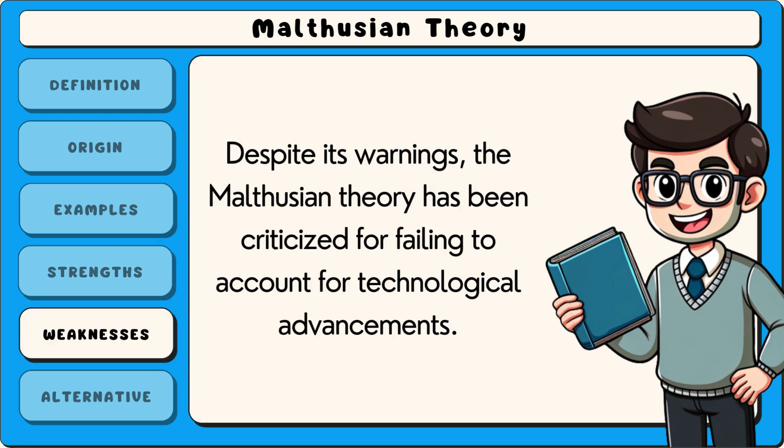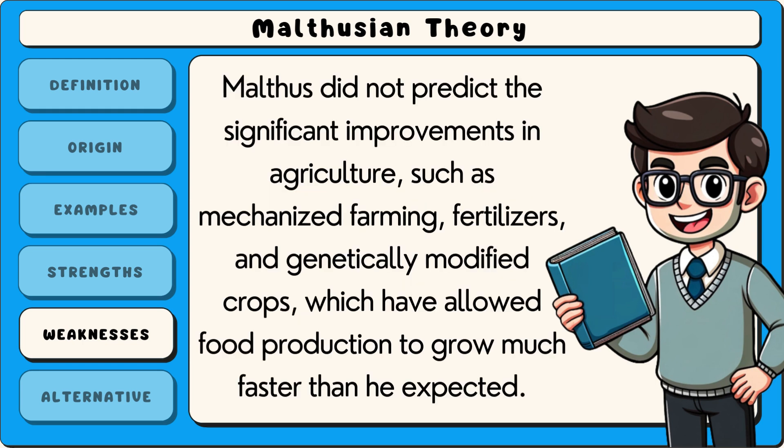Despite its warnings, the Malthusian theory has been criticised for failing to account for technological advancements. Malthus did not predict the significant improvements in agriculture, such as mechanised farming, fertilisers and genetically modified crops, which have allowed food production to grow much faster than he expected.